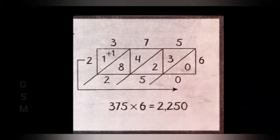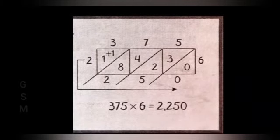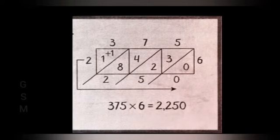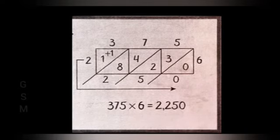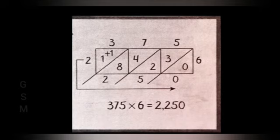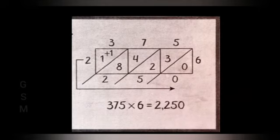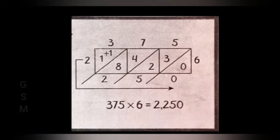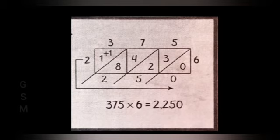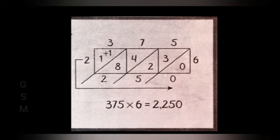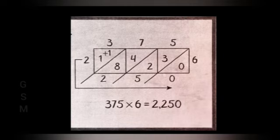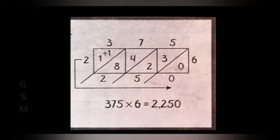Look at the next example, 375, a 3 digit number you have to multiply with one digit, the number is 6. First you have to make a grid like this and make a box diagonal box like this. Look at that, first one, 6 times 5 is 30, so we have to write 30. Next one, 7 times 6 is 42. And next one, 6 times 3 is 18.